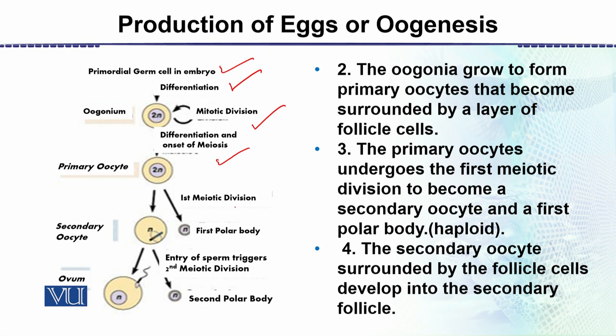The primary oocyte then undergoes the process of meiosis. There are two stages: meiosis I and then meiosis II. As a result of meiosis I, we see the secondary oocyte and a polar body. The number of chromosomes is reduced to half — the primary oocyte is now haploid.